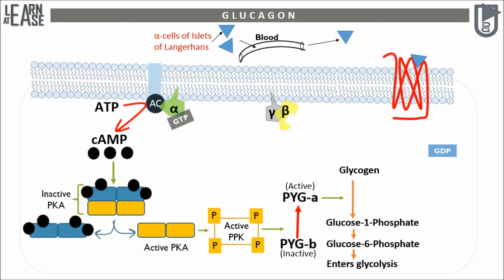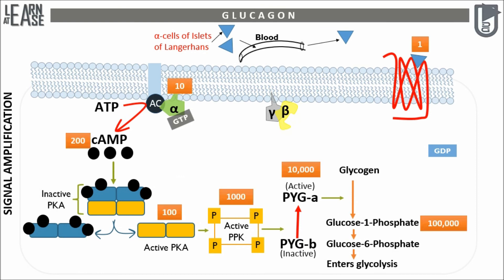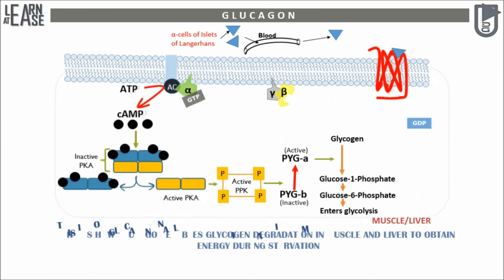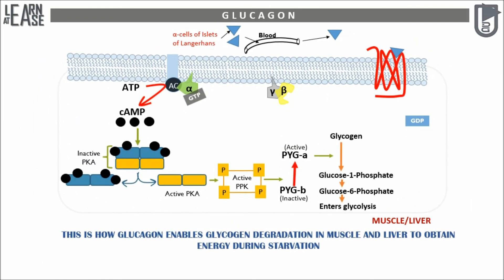This is the overall sketch of glucagon signaling. Another aspect of GPCR signaling is amplification. As shown in the animation, one molecule of glucagon yields 100,000 glucose molecules — this is why it is said that the signal is amplified. Pause the video to memorize the overall sketch of glucagon signaling. In brief, this is how glucagon enables glycogen degradation in muscle and liver to obtain energy during starvation.